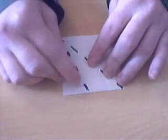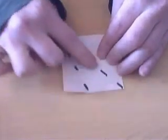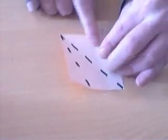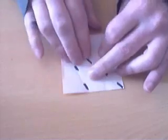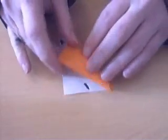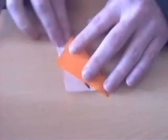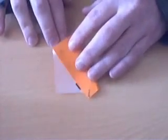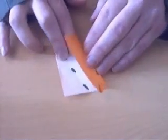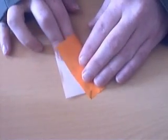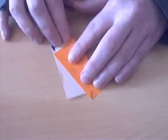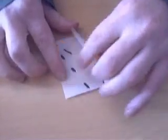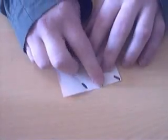Now bring this point here to lie along the diagonal, and this point here to lie along this edge. Like so. And unfold again. Up here is one third.